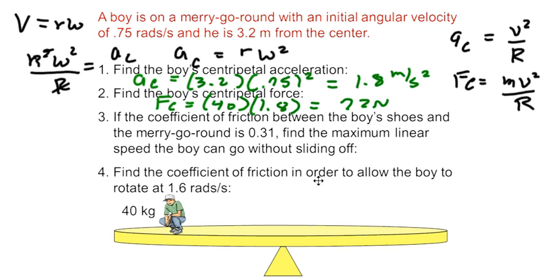Now, let's go on to the next part. If the coefficient of friction between the boy's shoes and the merry-go-round is 0.31, what's the maximum linear speed the boy can go without sliding? Well, we now know that force centripetal is equal to the force of friction. The friction between the boy's shoes is what's making him go to the center of the circle.